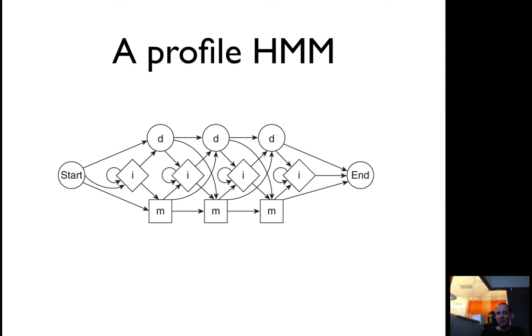In each of these states—not the delete states, but the insertion and match states—you have an emission. The emission in this case is your sequence. You can generate a sequence by going different paths here. You have an alignment in the match state, go to insertion state, you generate residues, etc. Then you can answer the question: How likely is it that this sequence is generated by this model?